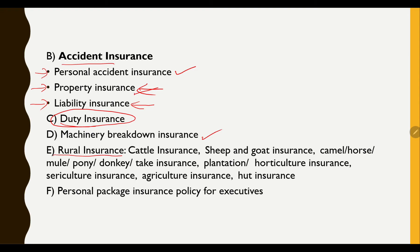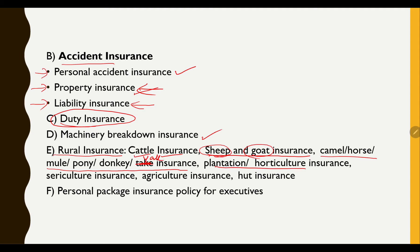Rural insurance is a broader category with several sub-categories. Cattle insurance covers milk cows, milk buffaloes, bullocks, and calves — providing risk cover for death due to accidents including natural calamities, strikes, riots, and terrorism. Sheep and goat insurance covers death from diseases or accidents including natural calamities. Similar insurance is available for camels, horses, mules, ponies, donkeys, and yaks.